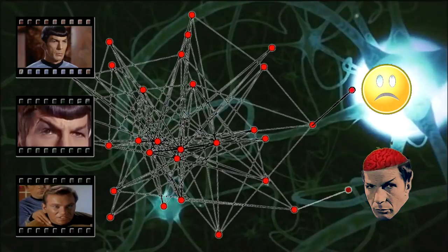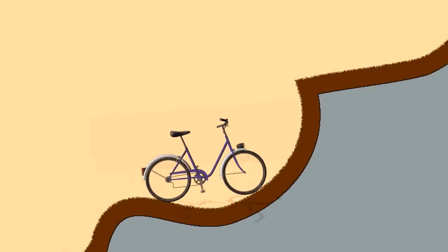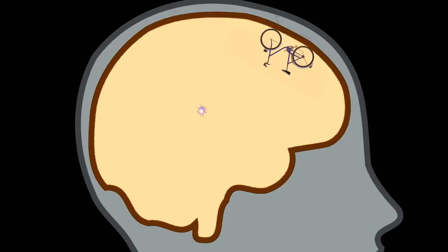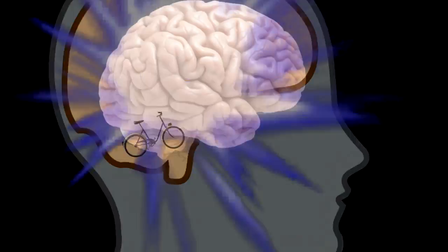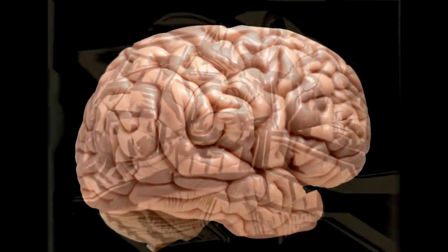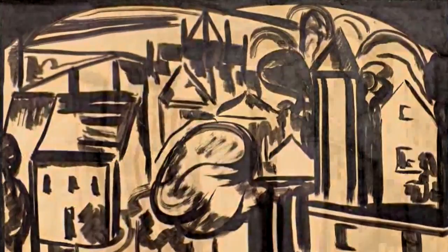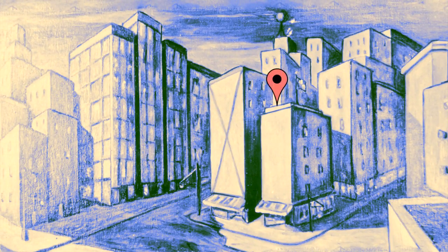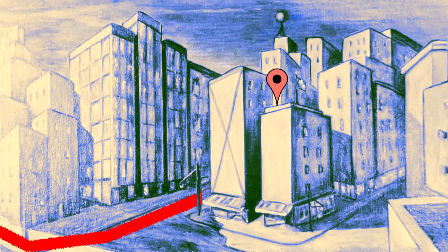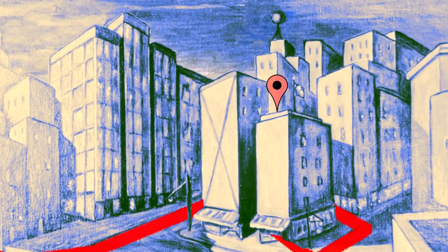Here comes the final and difficult stage: to spark the singularity, we need to provide our entity with an attention scheme to focus its resources on tasks and objects. With this map, the machine will know where it is, where it wants to be, and the possible ways to get there.